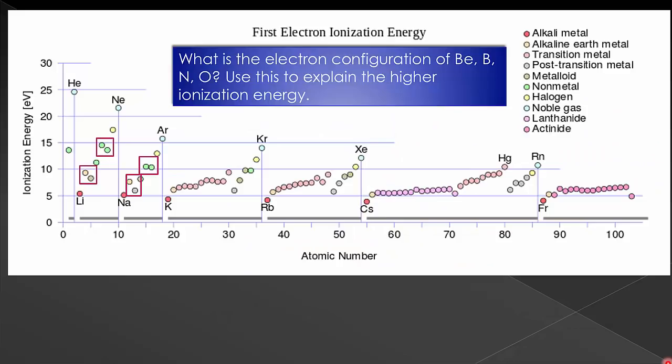Now that we know the general trend, we need to talk about some exceptions that we come across. We didn't see very many of these, or really any, in the radius periodic trend. And that's because the atomic radius doesn't really have anything to do with electron configurations.